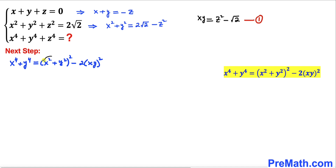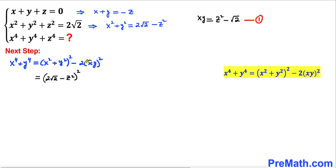We know that x squared plus y squared equals 2 times square root of 2 minus z squared, so I can write this as 2 times square root of 2 minus z squared whole square. We also know that xy equals z squared minus square root of 2 from equation 1, so I can write negative 2 times z squared minus square root of 2 whole square.